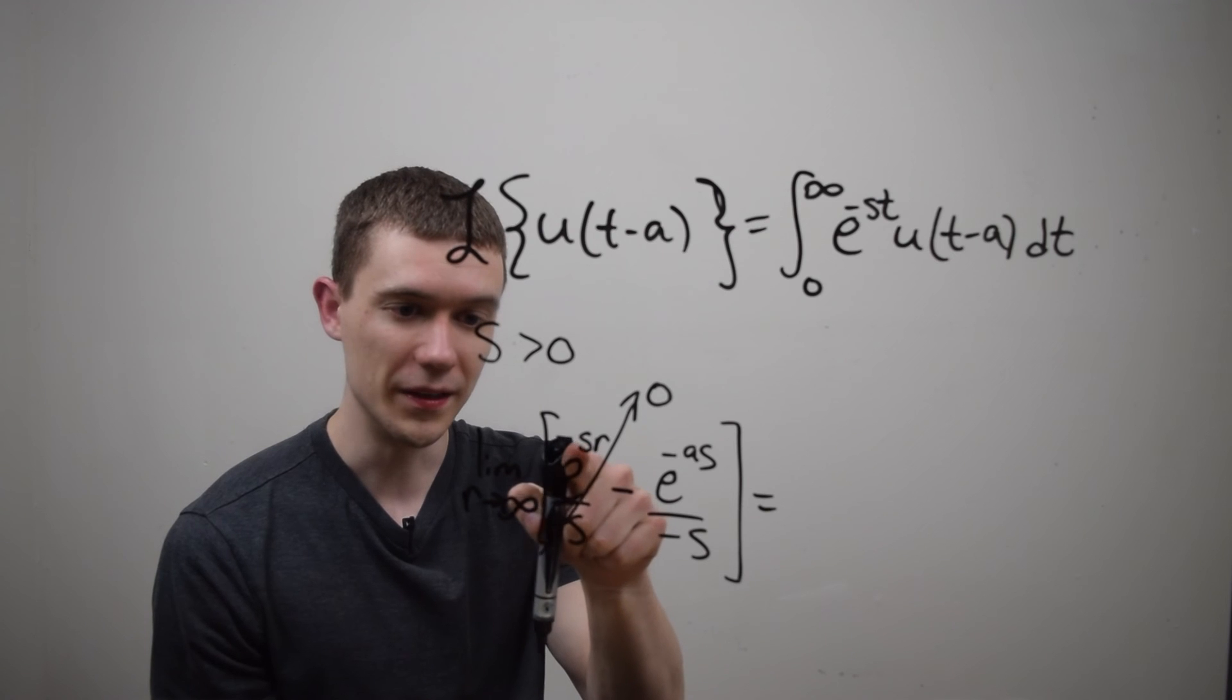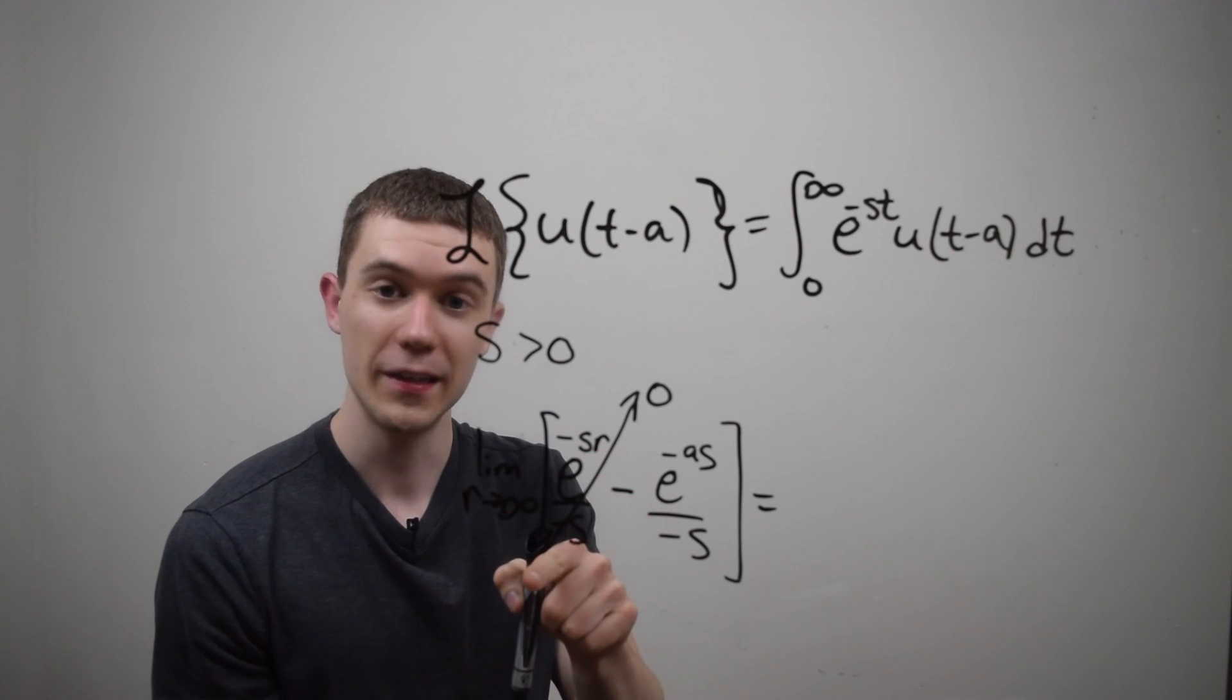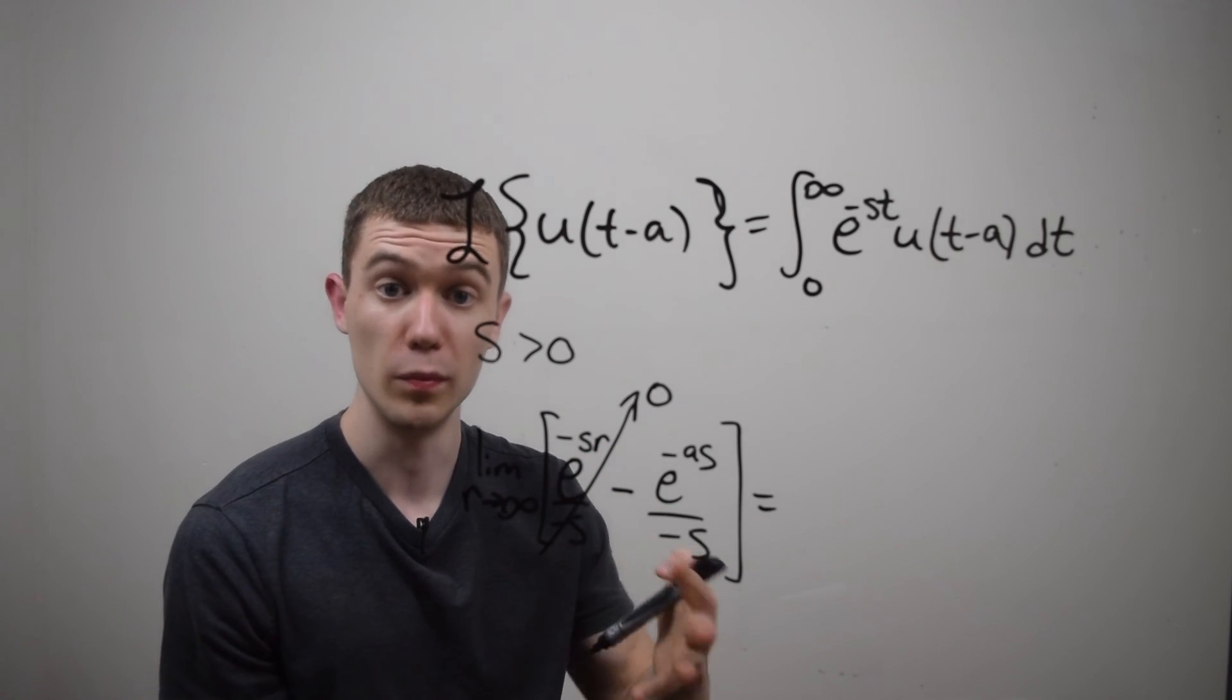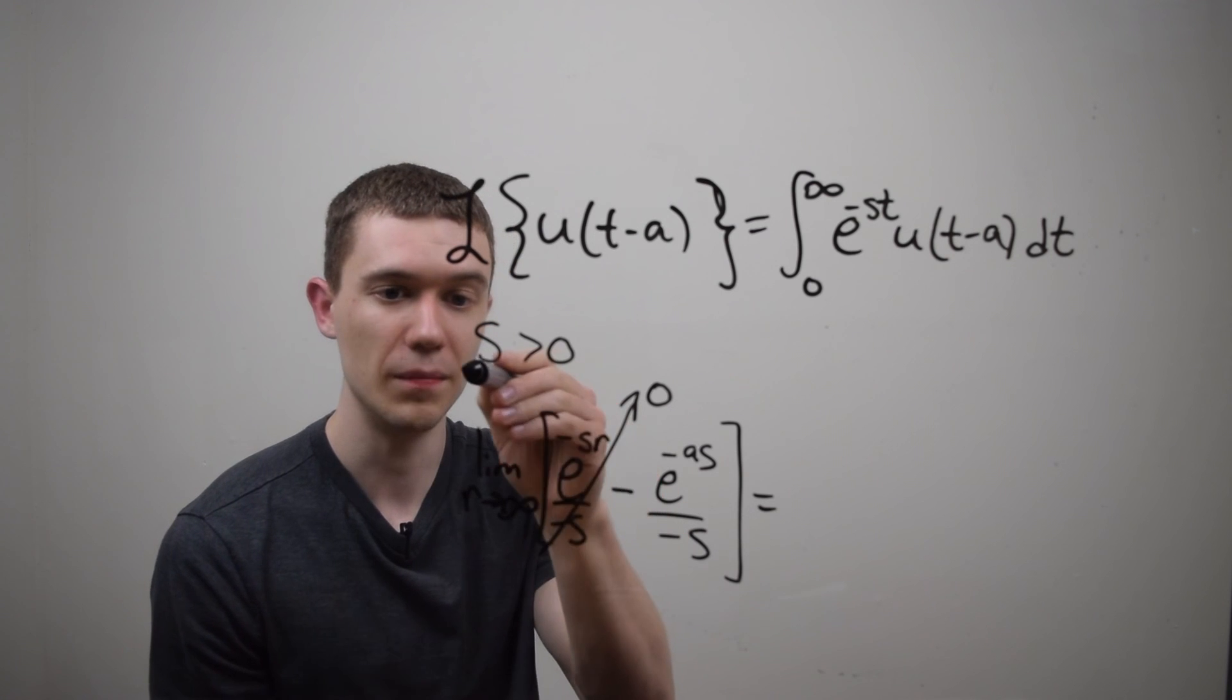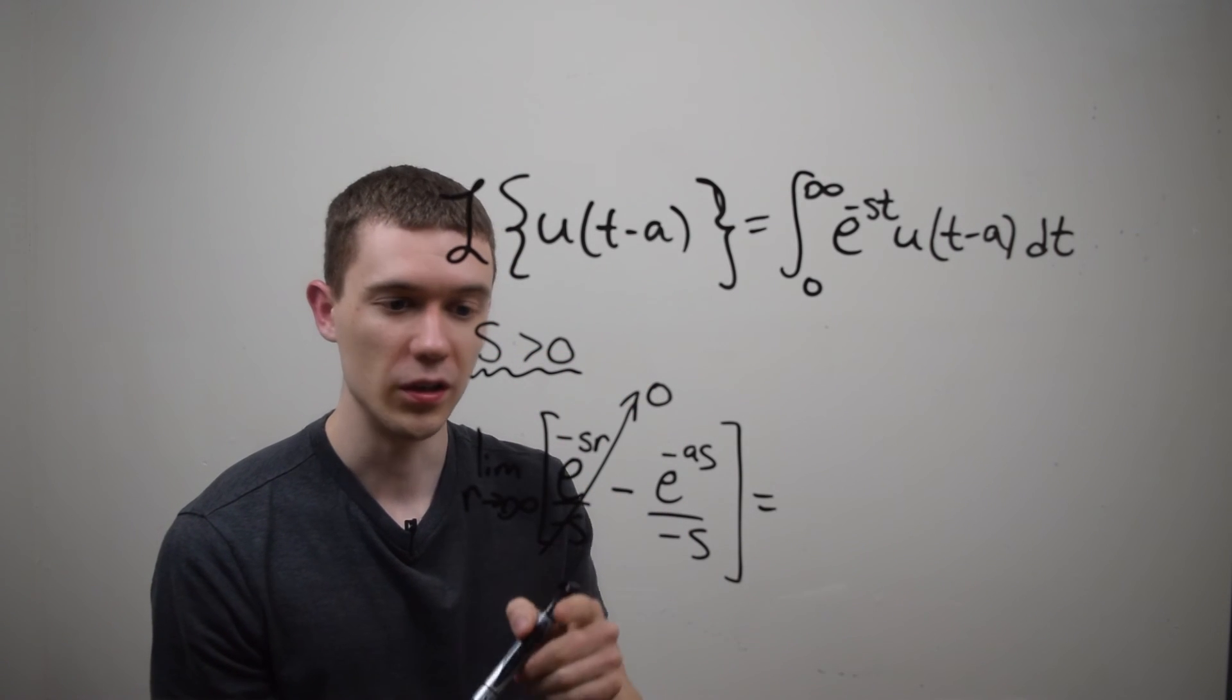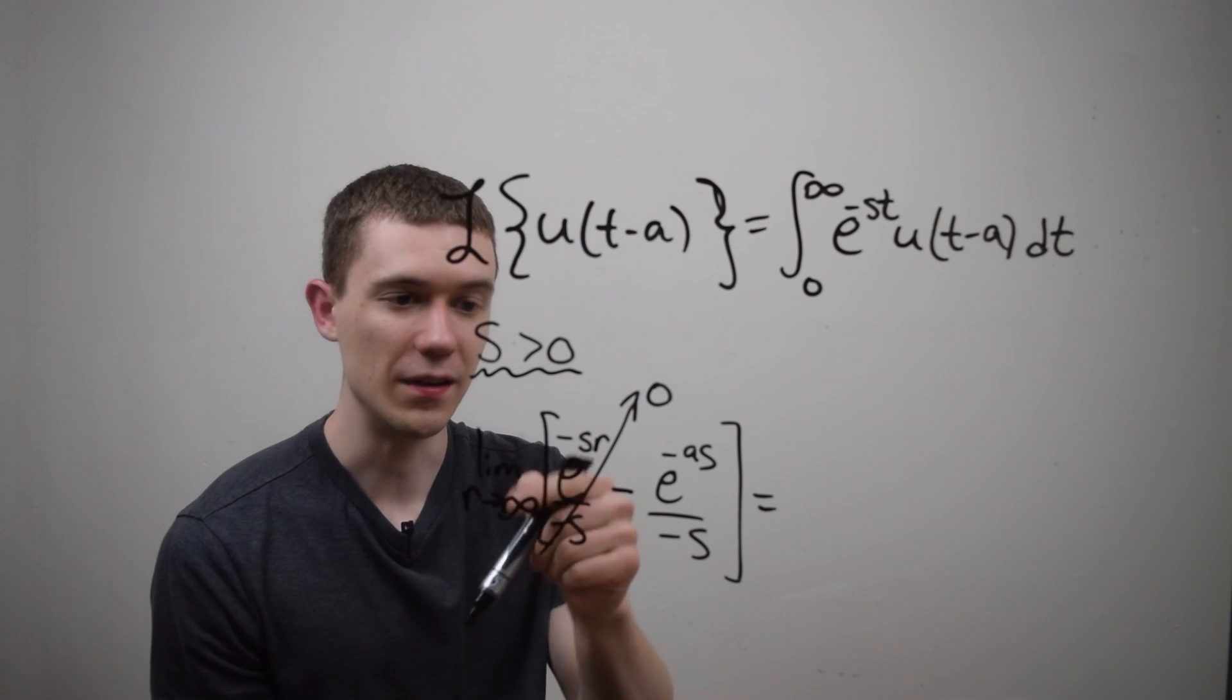Because otherwise, this would be e to the positive infinity and the Laplace transform would blow up. We don't want that to happen. So I need to make that restriction to make sure this limit goes to e to the minus infinity.